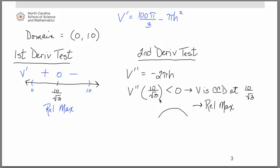So either way, by using the first derivative test or the second, you are able to prove that at 10/√3, we do indeed have a relative maximum.